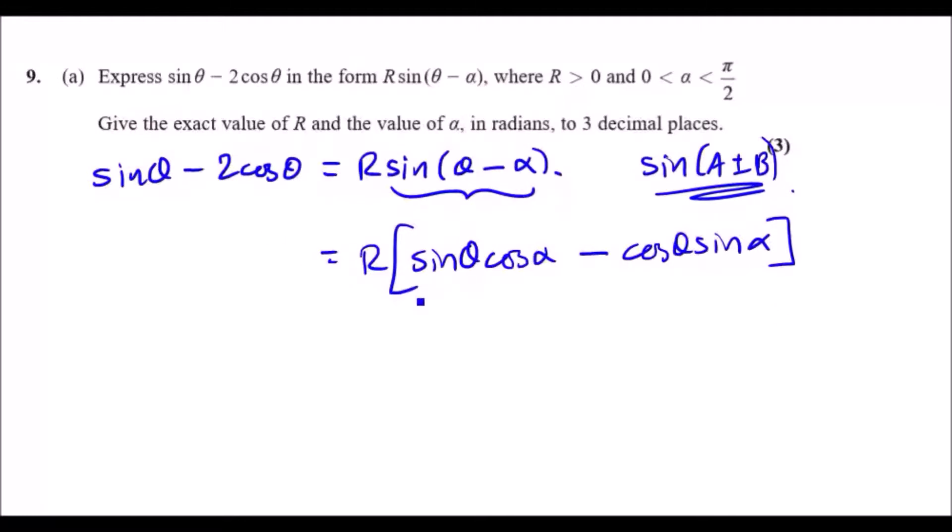Now we just match coefficients. You'll notice that you have a sin θ term on the left equal to sin θ on the right, and a cos θ here and cos θ there. The trick is to always match coefficients. For sin θ, we have a coefficient of one on the left and on the right we have a coefficient of R cos α, so for sin θ, 1 must equal R cos α.